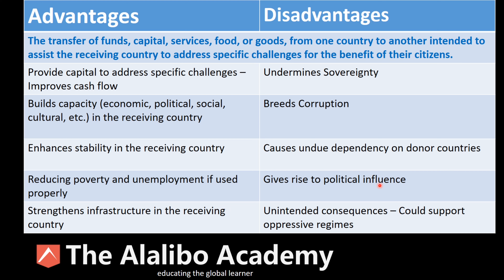Finally, there are unintended consequences. Foreign aid can support oppressive regimes — not intentionally, but because the money can be used to buy arms and turn against citizens. There are many examples of foreign aid being used to prop up repressive governments across the world. The opportunity and the money are there, and they can be used for the wrong purposes.